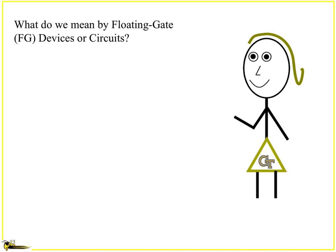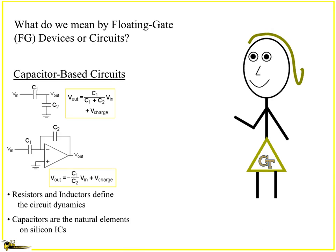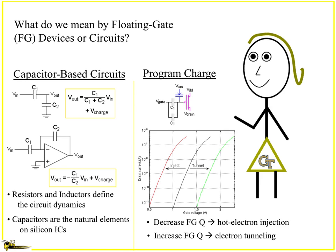The first thing is what do we mean by floating gate devices or circuits? At one level it's basically looking at capacitive circuits like you might imagine for the capacitive voltage divider or capacitors around an amplifier. What's nice is I get this additional charge term, and it's really amazing that I don't just have the passive element but I've also got this other element that can either be a negative or a positive. It's amazing because on chip we get capacitors as our natural elements.